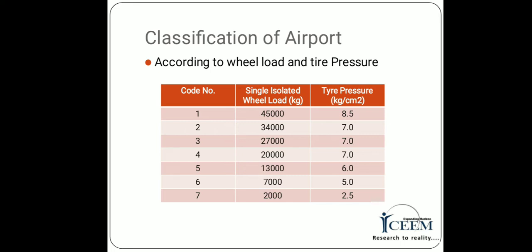The next classification is based on wheel load and tire pressure, in which airports are classified into 7 types. For the first type, the wheel load is 45,000 kg and tire pressure is 8.5 kg per cm². For types 3, 4, 5, 6 and 7, the wheel load in kg and tire pressure in kg per cm² are as shown in the table.